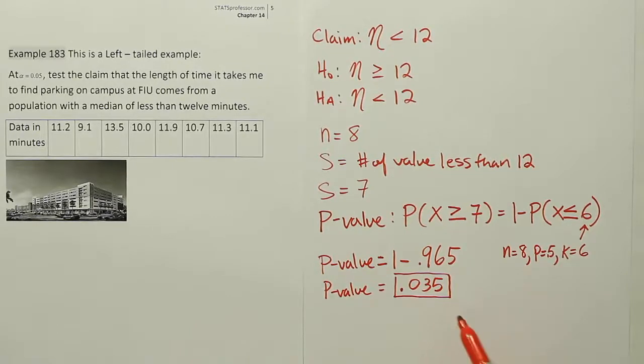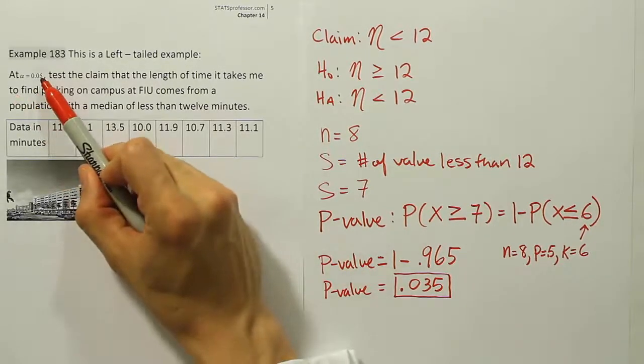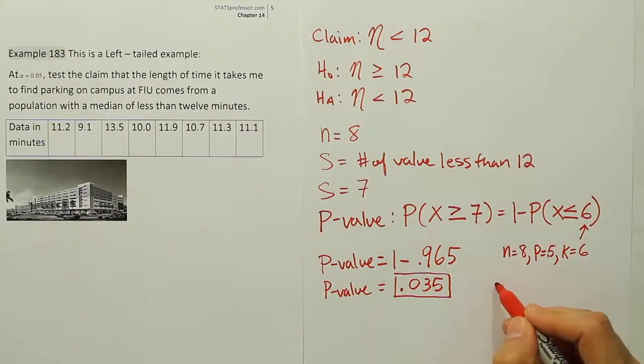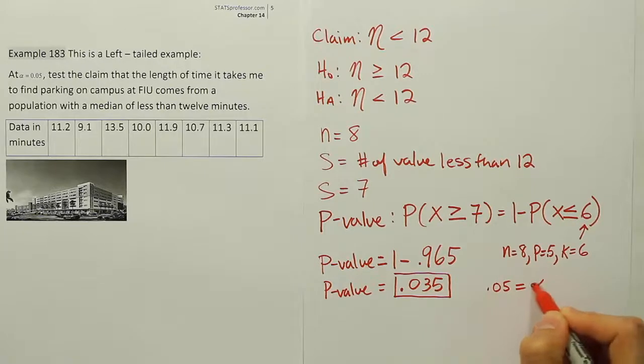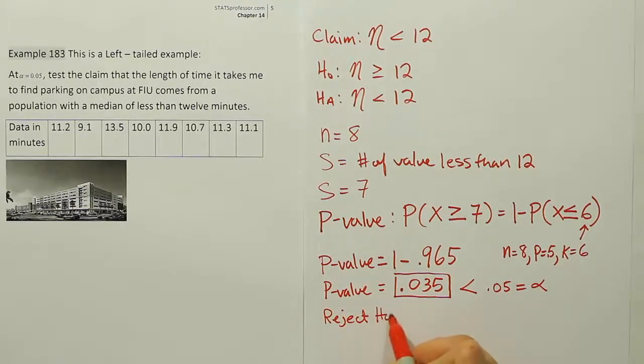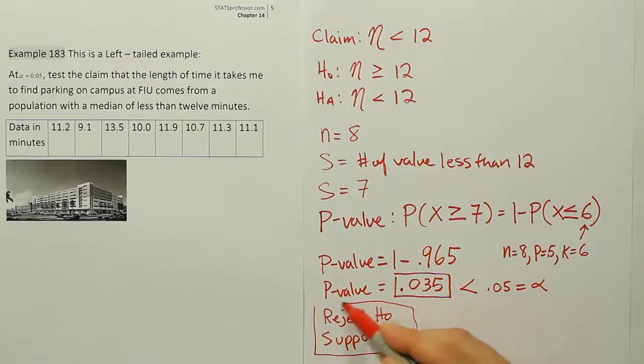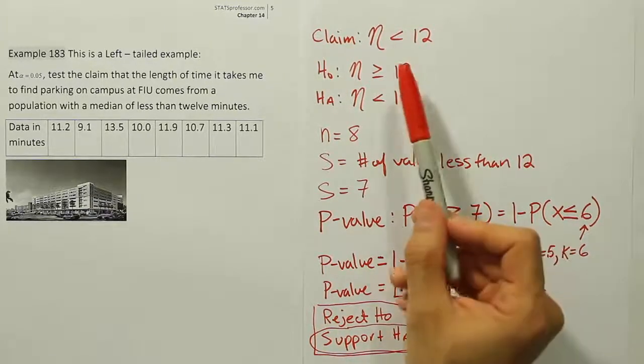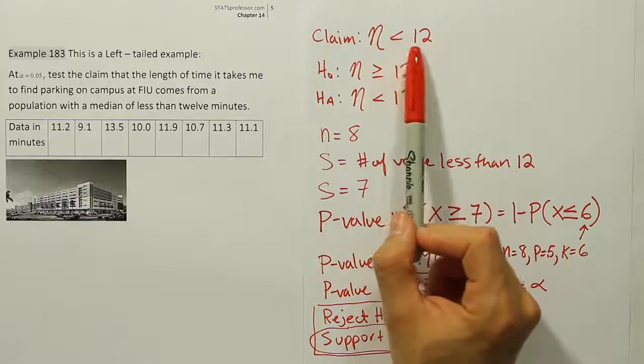If that's your p-value, how does it compare to alpha? Well, the alpha in this problem is 5% there. So we're going to say that 0.05 is equal to alpha. And when you make the comparison, you're going to say alpha is larger than the p-value. Whenever you have a small p-value, a p-value that's smaller than alpha, you're going to reject the null hypothesis. So reject the null hypothesis, and you're going to therefore support the alternative. Support the alternative hypothesis. And if you put those two things together and look at our claim, our claim is the alternative. So we're going to go ahead and say this indicates that we should support the claim that the median amount of time it takes to find parking on campus for me is under 12 minutes.